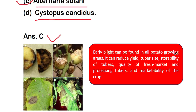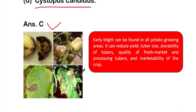Early blight can be found in all potato-growing areas. It can reduce yield, tuber size, storability, quality of fresh market and processing tubers, and overall marketability of the crop, having a huge impact on the potato market.